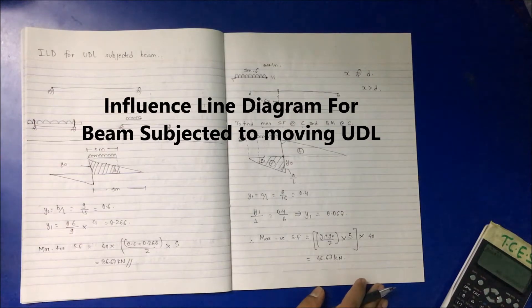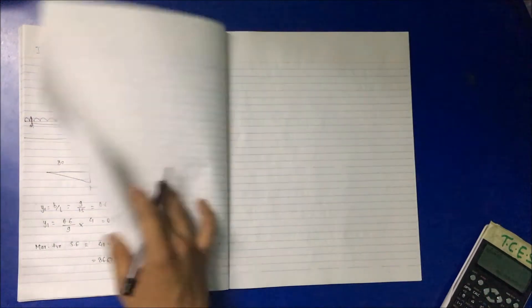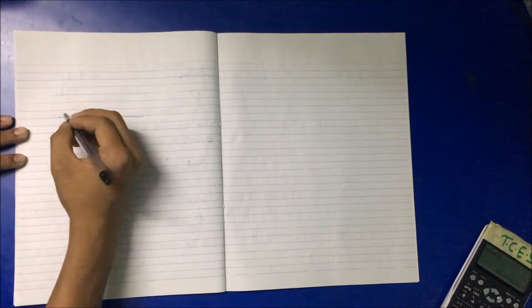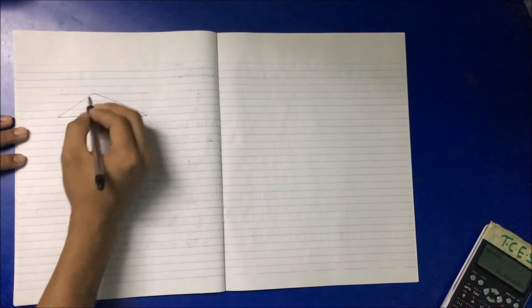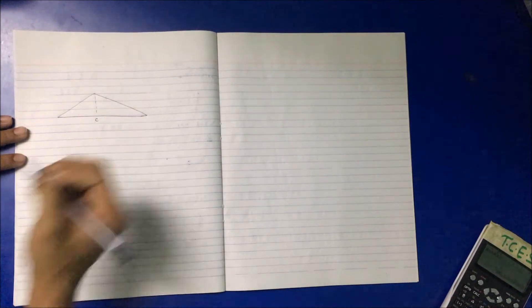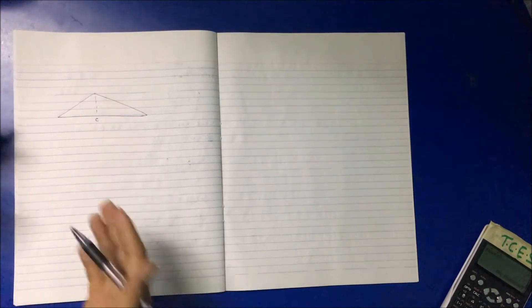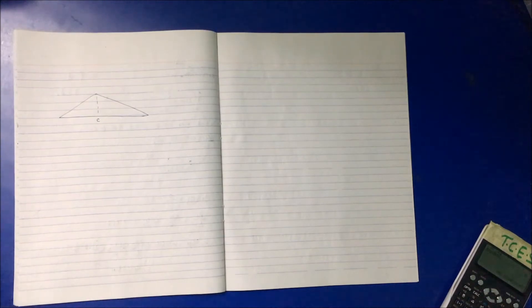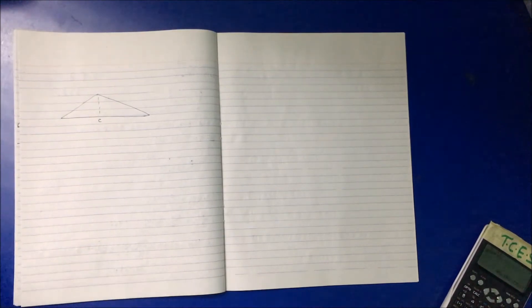Bending moment at C - you have to know ILD for bending moment. If this is the ILD for bending moment at C and you are provided with a UDL of shorter span, of shorter length than the span, when will or at which position will maximum bending moment occur? That is the question here.